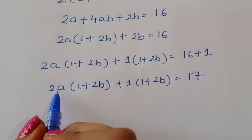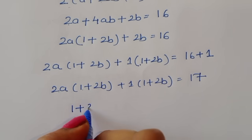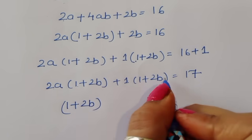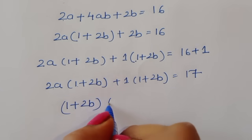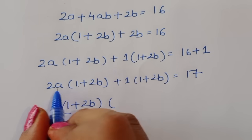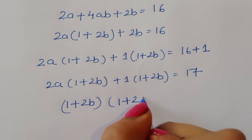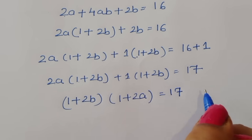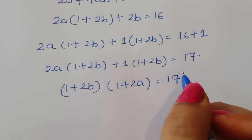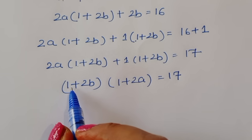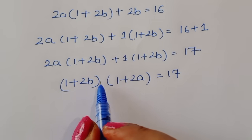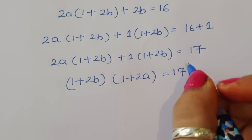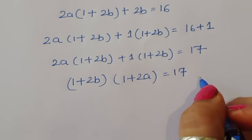So we have (1 + 2b)(1 + 2a) = 17. We now have this product equal to 17.